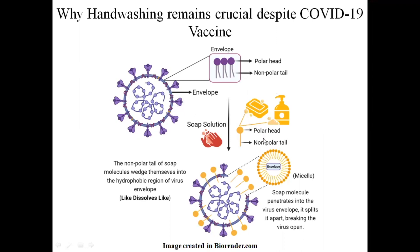Similar is the structure of soap, where you have a non-polar tail and a polar head group. When you wash your hands with soap and water, the hydrophobic tails of free-floating soap molecules attempt to evade water. In this process, these tails penetrate into the lipid envelope, breaking the virus open. This is based on the principle of like dissolves like.